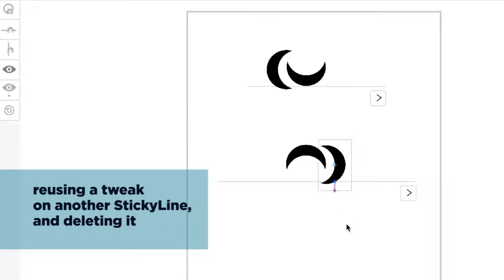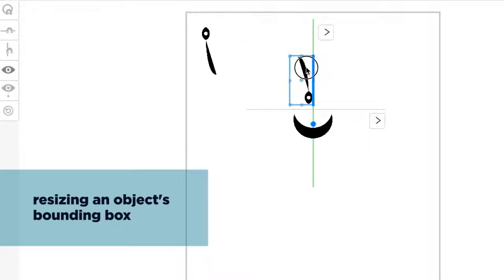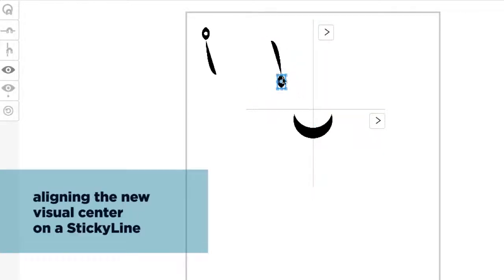Tweaks belong to the objects and can be deleted. Users can edit the bounding box of an object to match its visual extent. This affects both center and side alignments.